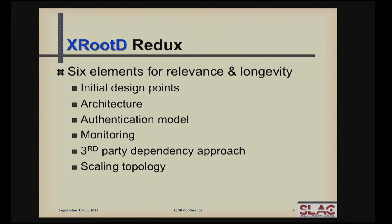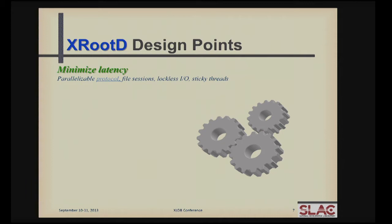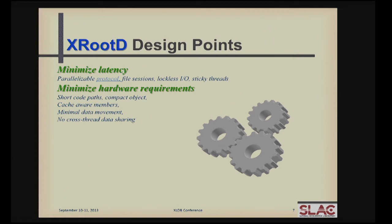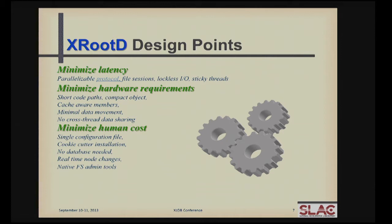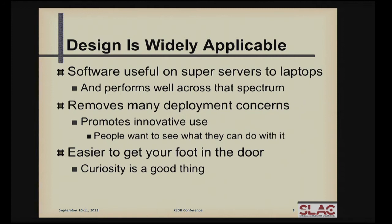So what made XRootD the success it is today? I'm going to go through six key elements that I think were really important in making this system long-lived and usable in quite a few different kinds of contexts. First was the design point. If you get the design point right, the system will last a long time. The design point was to minimize latency, and synergistically minimize the hardware requirements for the system. Given that we didn't have a lot of people, we also had to minimize human resources, which allowed us to maximize scaling. We achieved very low overhead and an incredibly small memory footprint, making the software usable in all sorts of contexts.